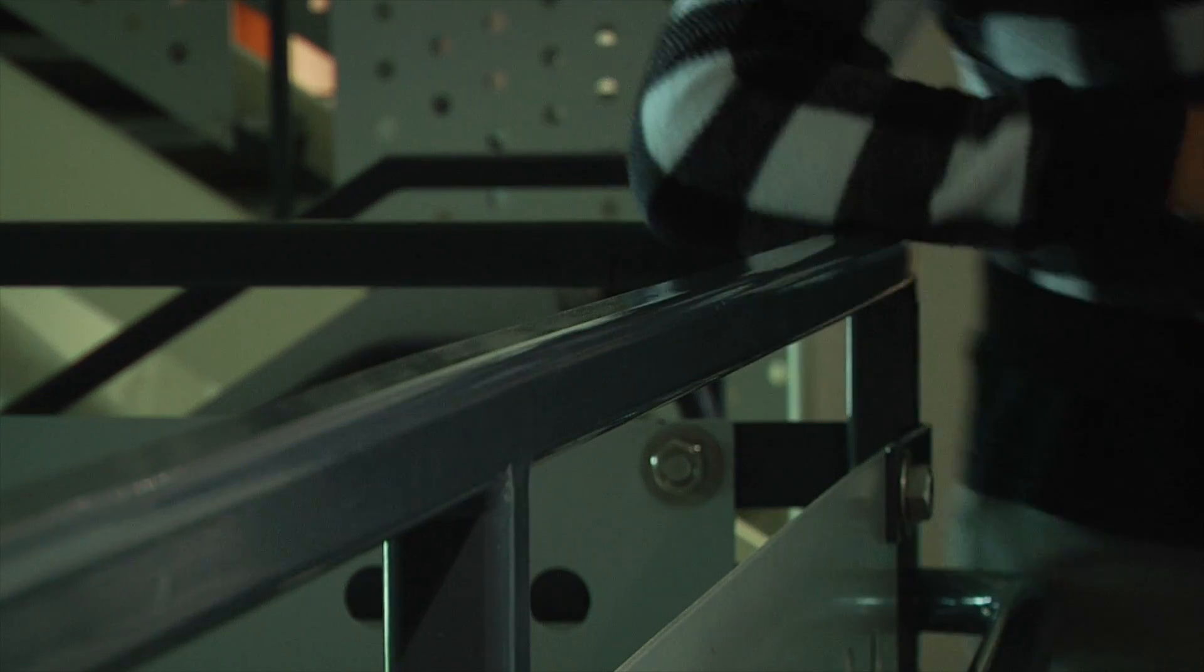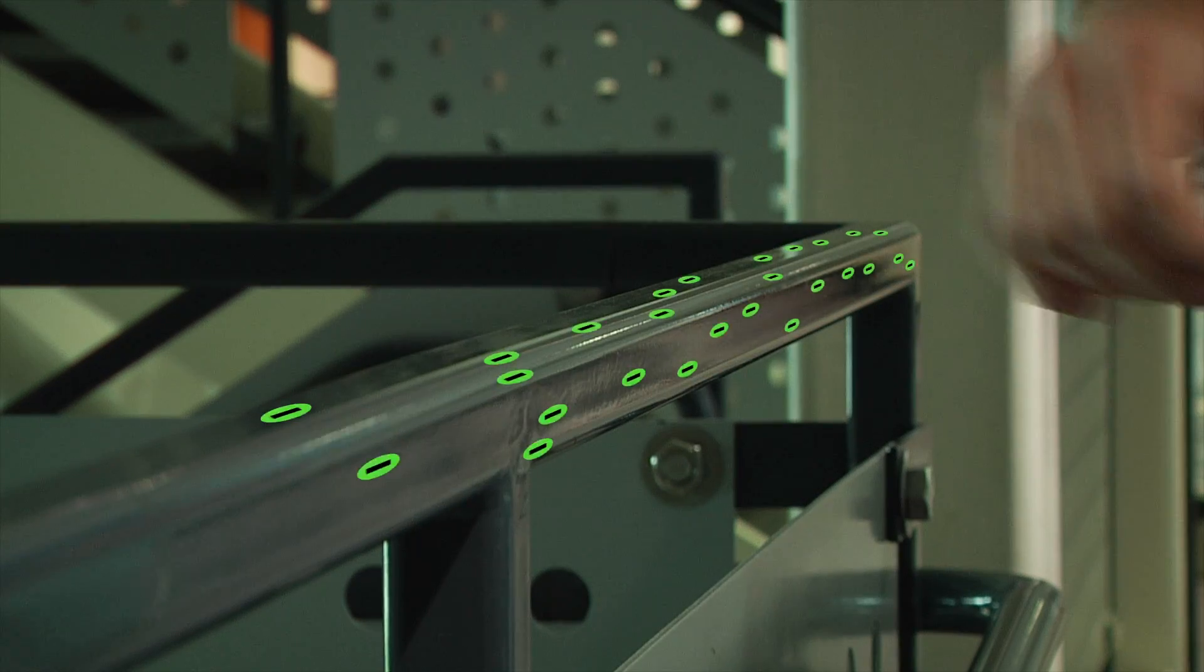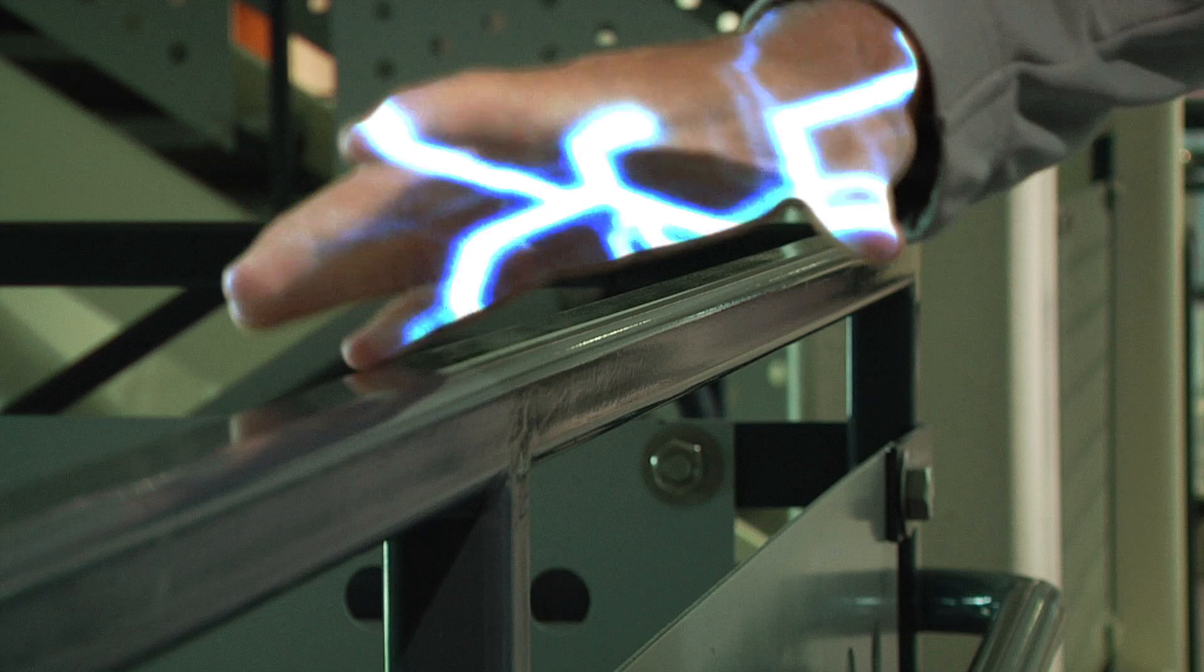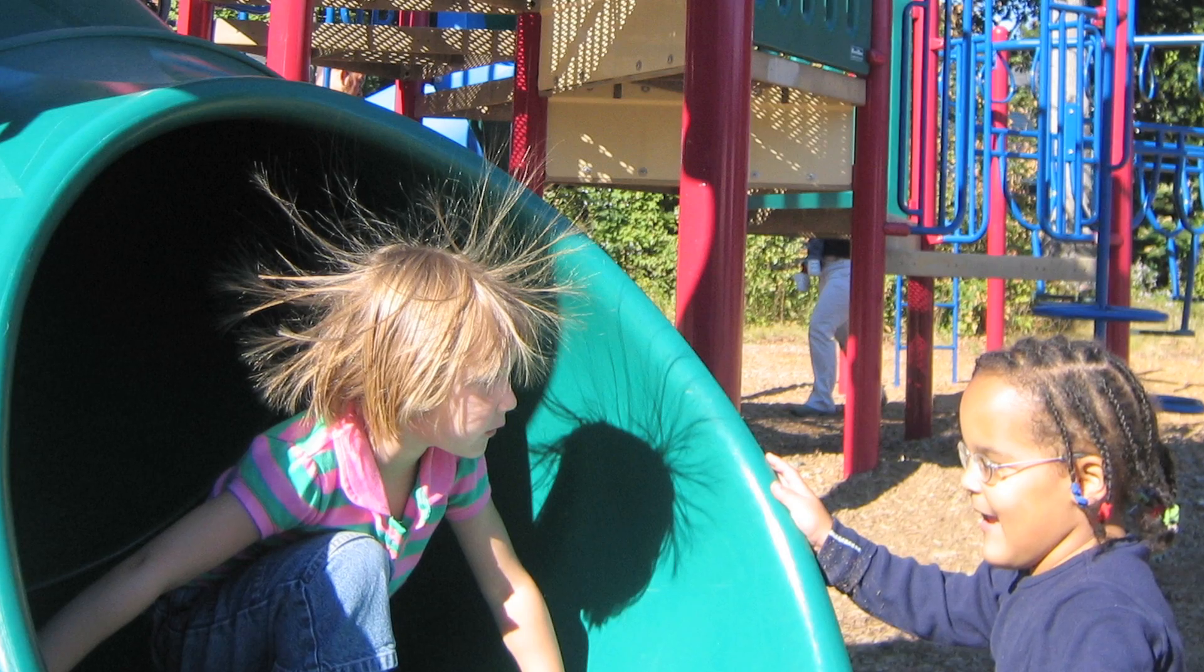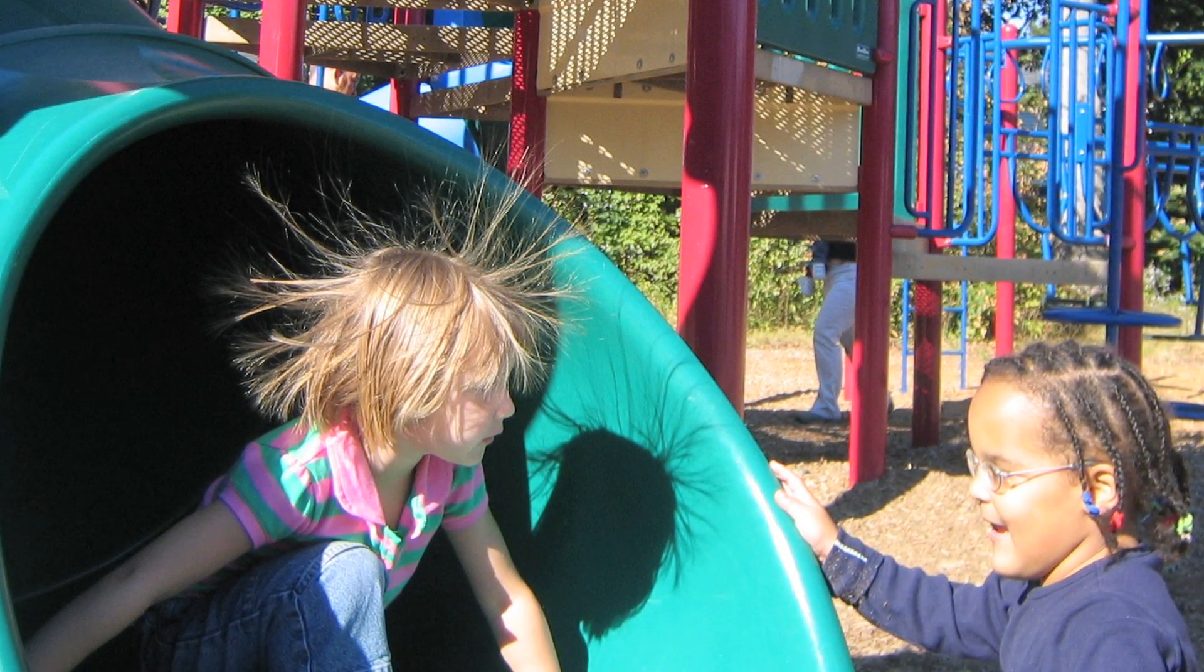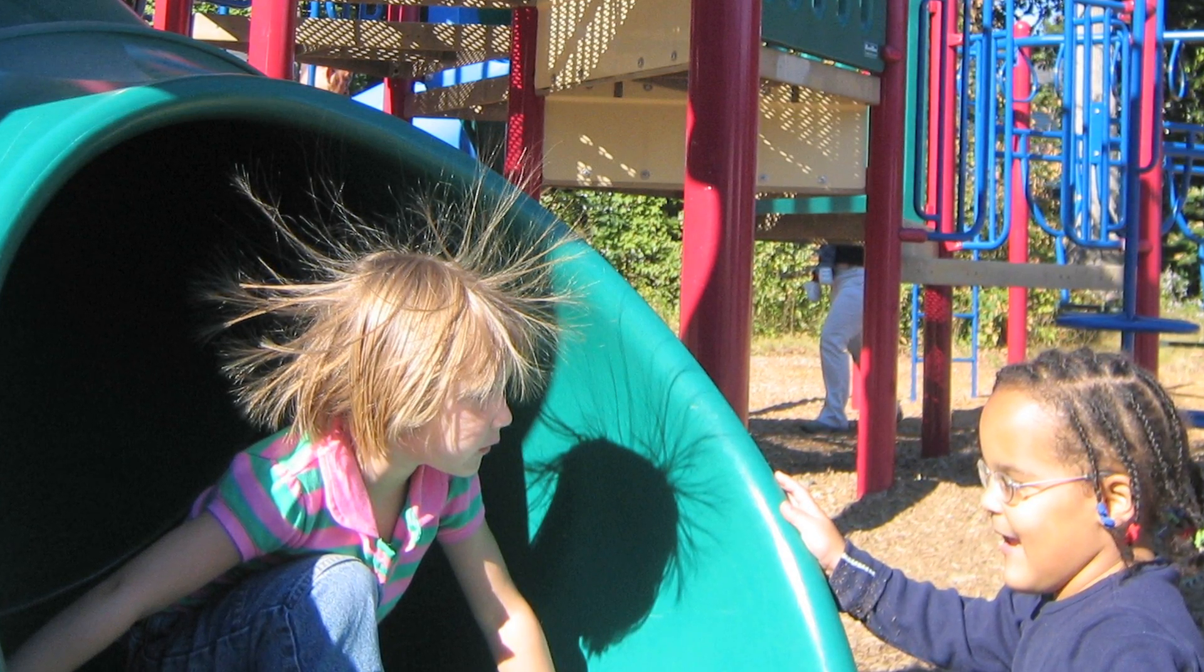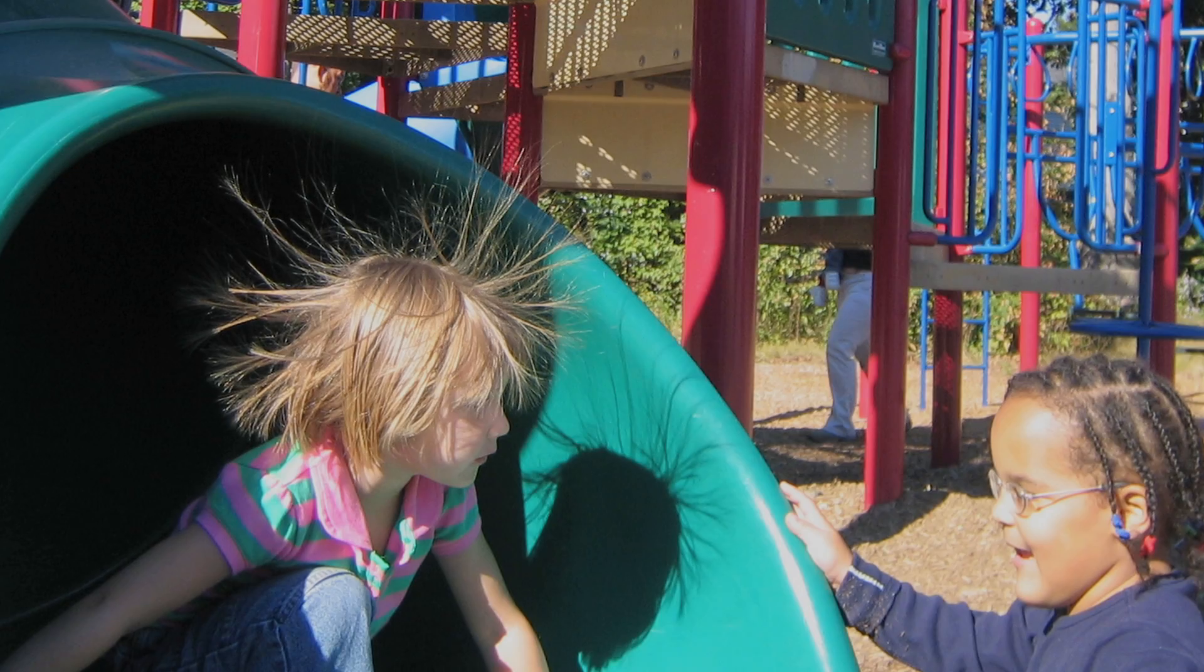If you've ever felt static shock by touching a material, this is an example of electrostatic discharge. Our bodies are actually good conductors of electricity, allowing us to neutralize statically charged materials. This is why sliding through a plastic slide in the playground may have caused your hair to stand up. As you know, plastic is not a good electrical conductor and static charges can easily build up on its surface. Thank you for watching.